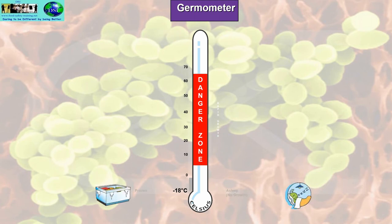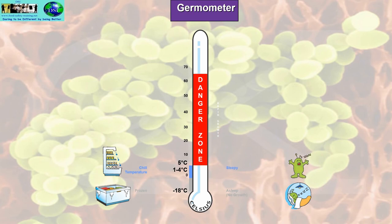At minus 18°C, bacteria are in hibernation — they won't grow, but you won't kill them by freezing. They remain dormant. Minus 18 or lower is the temperature our freezer should be at. At 1 to 4°C — our fridge temperature — ideally below 3°C, food safety bacteria, apart from listeria, won't grow. At this temperature the bacteria are still sleepy; it's a bit too cold for them to multiply.